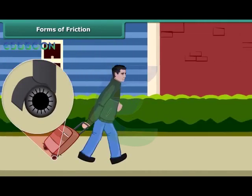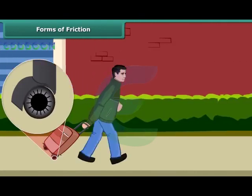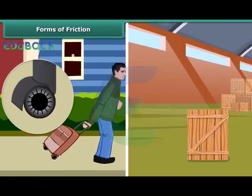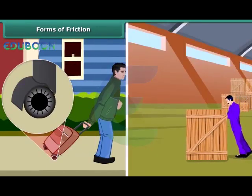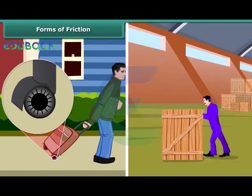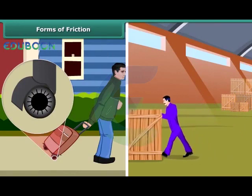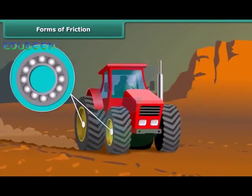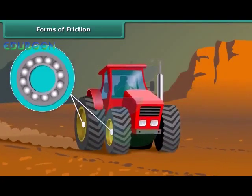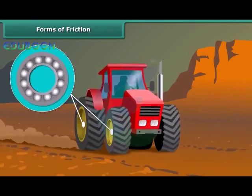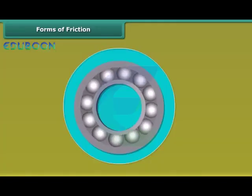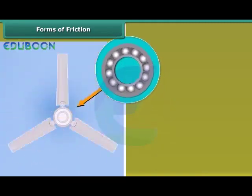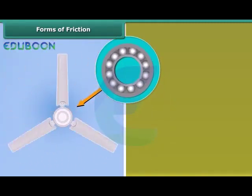The force of friction between the rollers on a body and the surface is called rolling friction. Rolling friction is much less than sliding friction. Since rolling friction is smaller than sliding friction, sliding is replaced in most machines by rolling through the use of ball bearings. Common examples are the use of ball bearings between hubs and the axles of ceiling fans and bicycles.